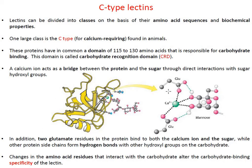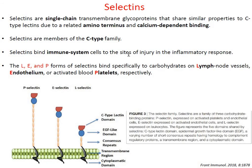The type of amino acids interacting with the incoming sugar molecule gives specificity to the lectin protein. Changes in amino acid residues within the CRD domain confer specificity to a particular lectin protein in recognizing certain types of carbohydrate molecules.